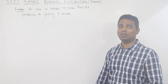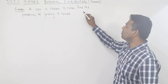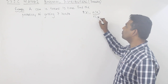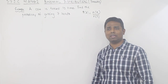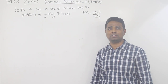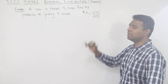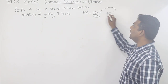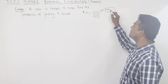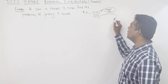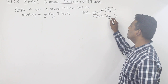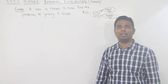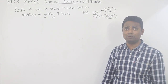Normally what we have learned at the lower standards: Probability of A is equal to N(A) upon N(S). So probability of A is N(A) upon N(S). N(A) is the number of elements in the event set, and N(S) is the number of elements in the sample set.